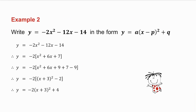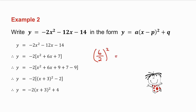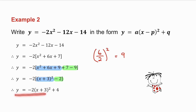In the second example, x squared has a coefficient of minus 2. So first we take out the minus 2, leaving x squared plus 6x plus 7. We take the coefficient of x which is 6, halve it and square — 6 over 2 is 3, and 3 squared is 9. So we add 9 and subtract 9. The first three terms form a perfect square and we combine the last two terms. Then we multiply the minus 2 back into the bracket, giving y equals minus 2 bracket x plus 3, all squared plus 4.